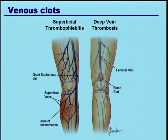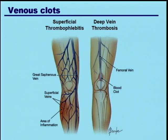The deep veins are tucked underneath the muscles — they're bigger veins, fewer of them, with more blood flowing through them. This is where deep vein thrombosis occurs. Superficial thrombophlebitis can sometimes look a lot like a DVT: you have pain, redness, and swelling, but it's more on the surface, more localized. You tend not to have diffuse swelling of the whole leg.